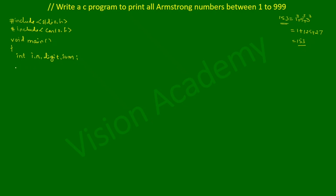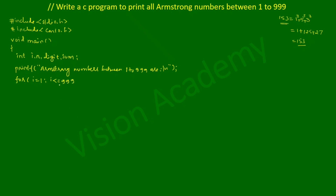Now we print a heading using printf("Armstrong numbers between 1 to 999\n"); with a semicolon. Then we set up a for loop: for(i = 1; i <= 999; i++) — because we need to check each and every number from 1 to 999.